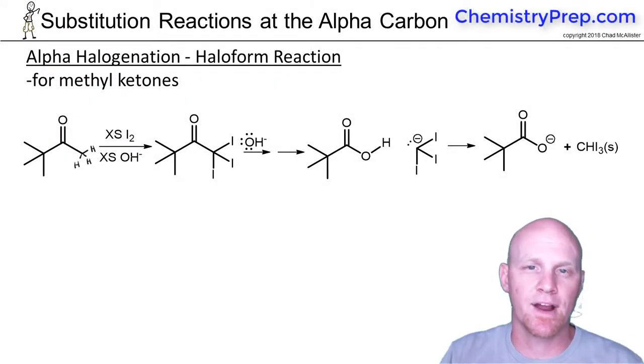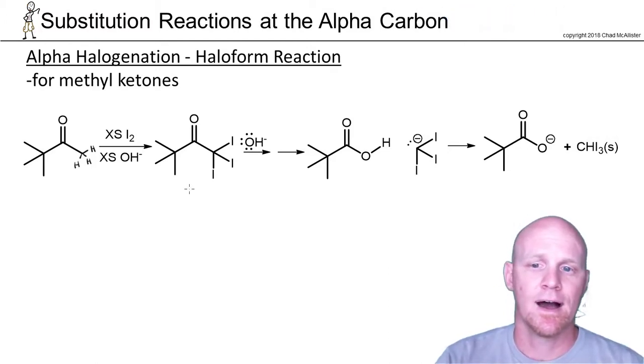We'll take a brief look at what's called the haloform reaction, and technically it starts off with base-catalyzed alpha halogenation. Here's the relevance here, and in this case we're going to do what's called exhaustive iodination.